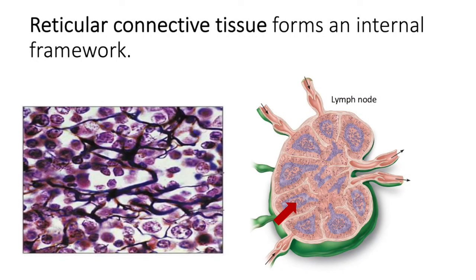Reticular connective tissue is one of my favorite tissues because it's very pretty — I think it looks like Japanese cherry blossoms. Because of the reticular fibers within this type of connective tissue, it provides a nice framework for internal structure, like scaffolding. We find this type of tissue in lymph nodes, the spleen, and bone marrow — locations where a framework inside the organ is needed so that other cells and processes can occur.